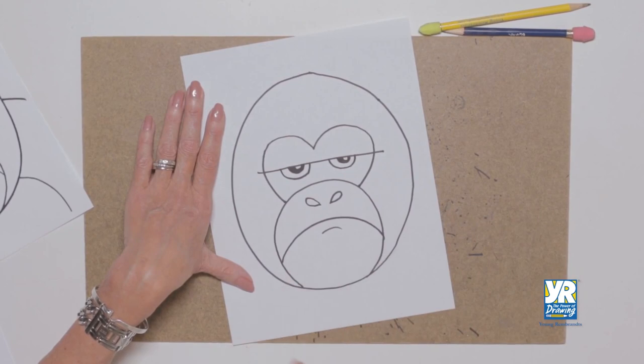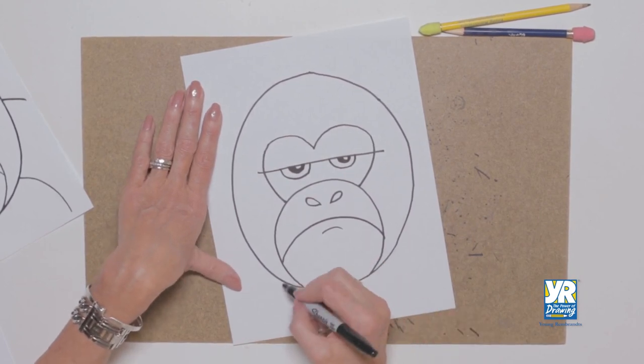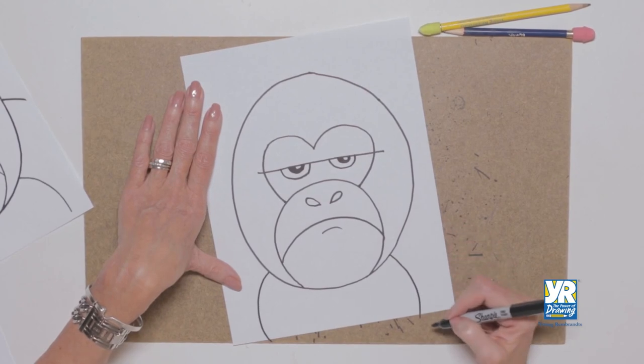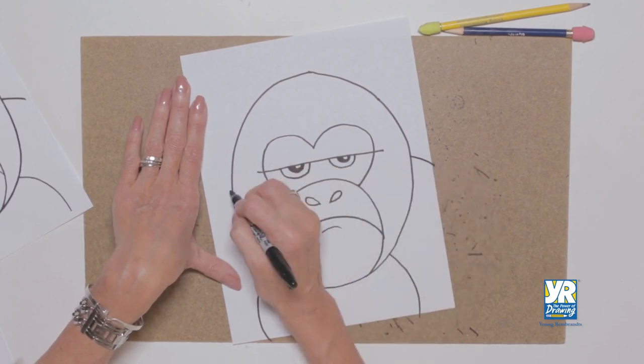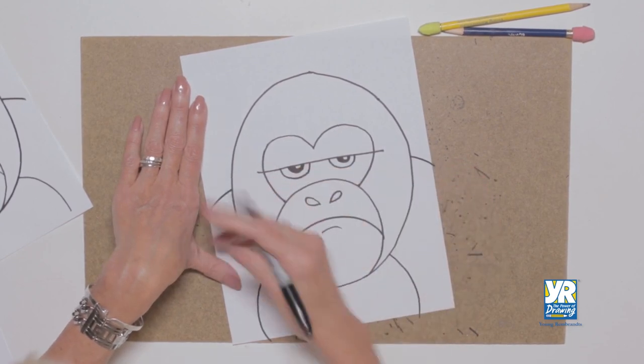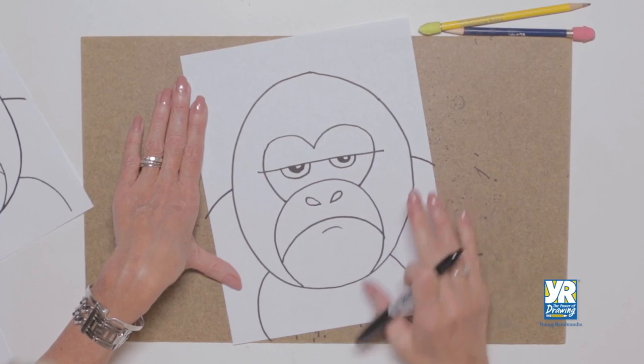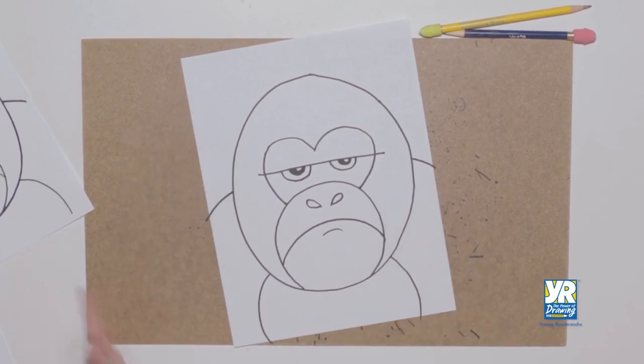Okay, now the trick on a gorilla is we've got to have a line where his belly is, but what really makes a big difference—he looks a little goofy now—it's all about the shoulders. His shoulders are up so high because he's that hunched over big guy, and there we have our gorilla.